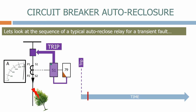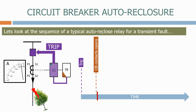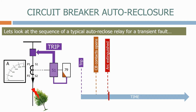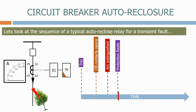We start the auto reclose sequence. The circuit breaker is now tripped and the circuit breaker contacts open. The current now reduces and after a short time delay, the arc will be extinguished. After a fixed time, we reset the protection system automatically.